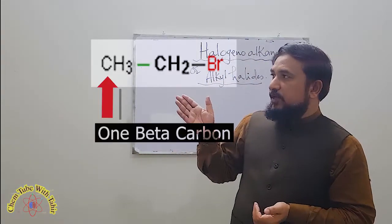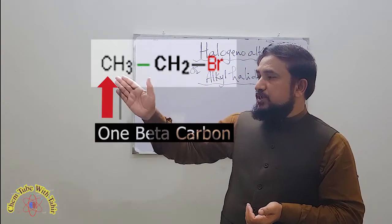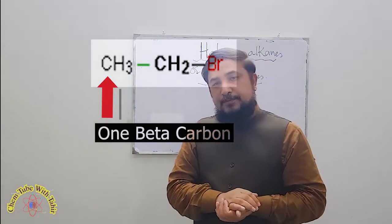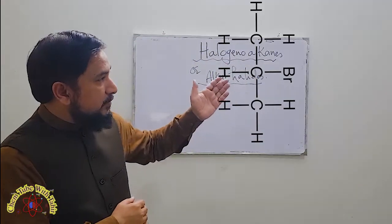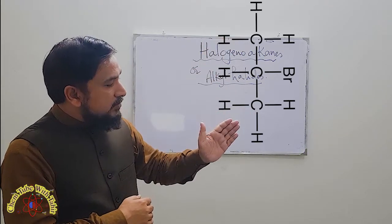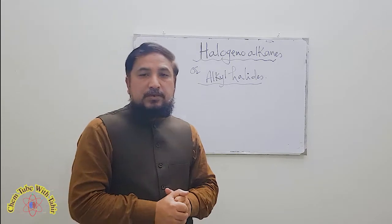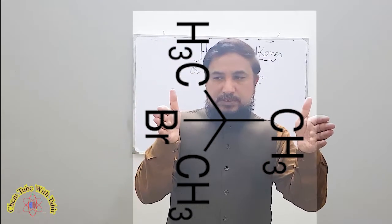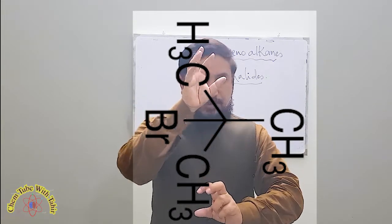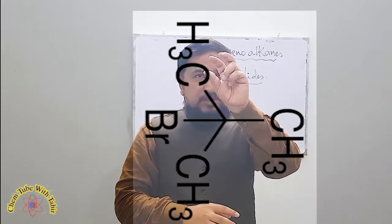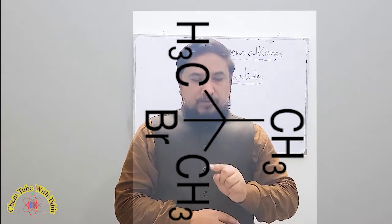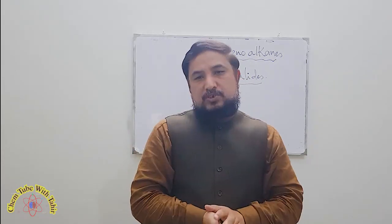Look at this example. We have an alpha-carbon, and this is the beta-carbon. If we have one beta-carbon, this is known as a primary haloalkane. But if we have two beta-carbon atoms — this is the first beta-carbon and this is the second beta-carbon — this is known as a secondary haloalkane. Now look at this example: this is the alpha-carbon, and here we have three beta-carbons — this is the first, this is the second, and this is the third beta-carbon. So if we have three beta-carbon atoms, this is known as a tertiary haloalkane.